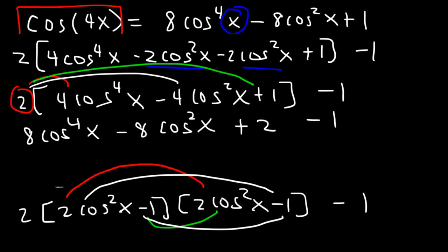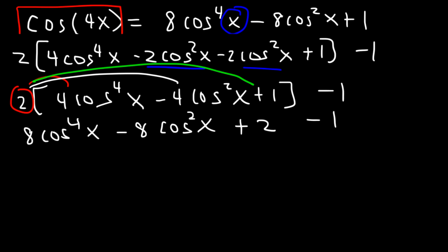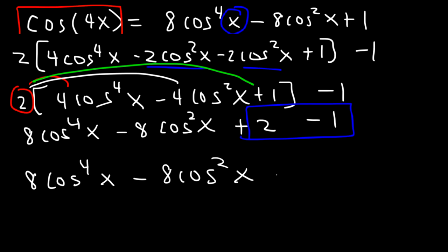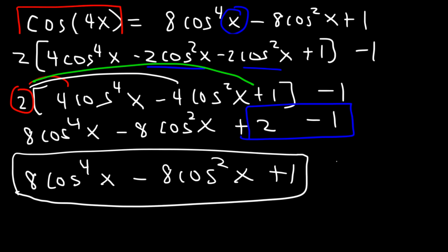We also have the -1 on the outside. Combining 2 - 1 gives +1, so our final answer is 8cos⁴x - 8cos²x + 1. The left side matches the right side — identity verified. To summarize: to reduce an angle from 2x to 1x, use the formula once; from 4x to 1x, use it twice; from 8x to 1x, use it three times — going 8x→4x, 4x→2x, and 2x→1x.